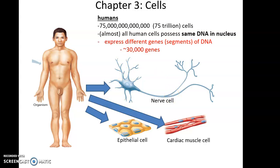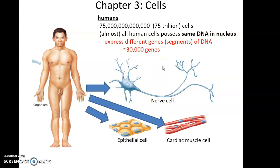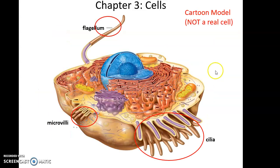There are approximately 30,000 genes in the human genome. While most cells will produce proteins from certain genes, individual cells like the nerve cell will have genes expressed only in nerve cells. Here is a cartoon of a cell from our textbook.